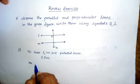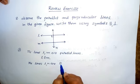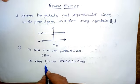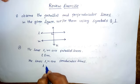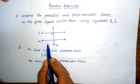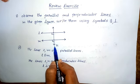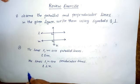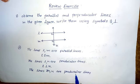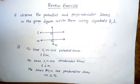Lines L and N are perpendicular lines, written as L ⊥ N. Next, observe lines M and N — these two lines also meet at a point where a right angle is formed, so M and N are also perpendicular lines. M ⊥ N. This is the solution for problem eight.